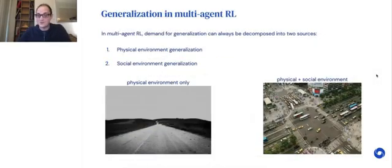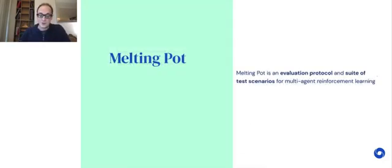In multi-agent reinforcement learning, the demand for generalization can always be decomposed into two sources: the demand for generalization that comes from the physical environment and the demand for generalization that comes from the social environment.